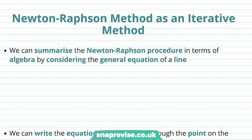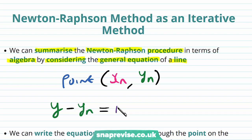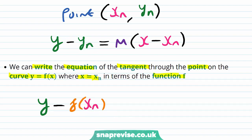So what is the Newton-Raphson method as an iterative method? We can summarize the Newton-Raphson procedure in terms of algebra, by considering the general equation of a line. Given a point on the line, which we're going to write as (xn, yn), we can form the equation of that line by taking y, subtracting yn, and this will be equal to the gradient of the line m multiplied by x minus xn. We can write the equation of the tangent through the point on the curve y equals f(x), where x equals xn, in terms of the function f. We would have y minus f(xn) is equal to f'(xn), because this would be the gradient of the tangent, multiplied by x minus xn.